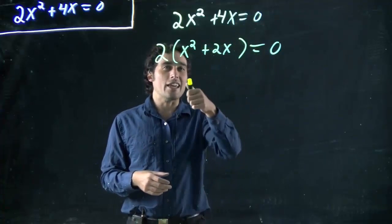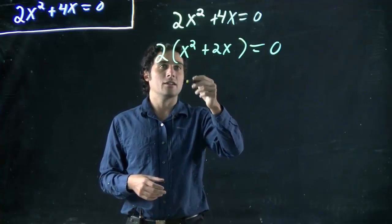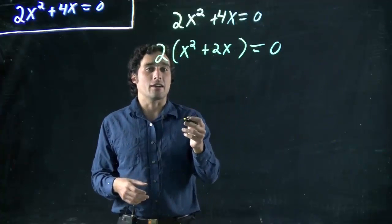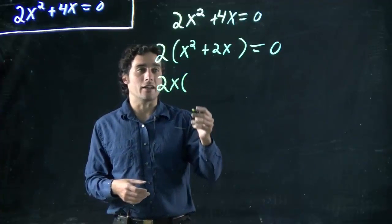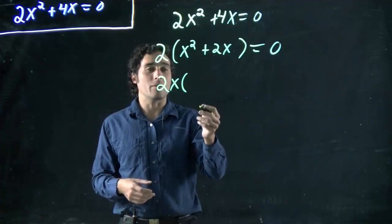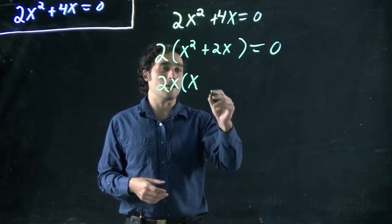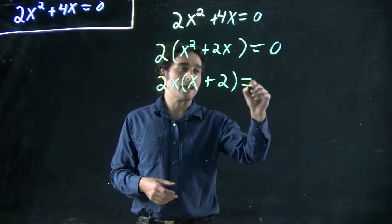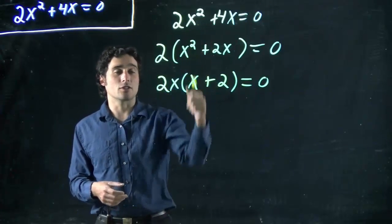But I'm not done. Is there anything else I can bring out? Anything else they have in common? 1x. They both have at least 1x. So I can bring out an x. You can also think divide. So if I divide this one by x, x² divided by x gives me x. And 2x divided by x is 2. So I've actually factored this out. If I multiply this back in, I'd get my original result.